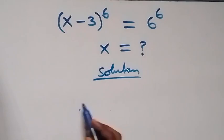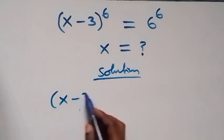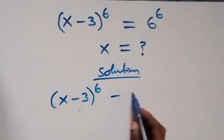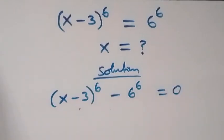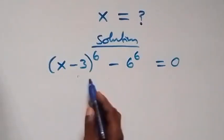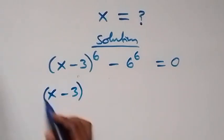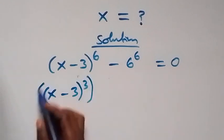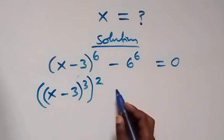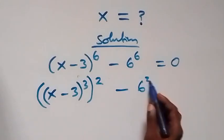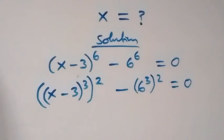Let's take 6 raised to power 6 to the left hand side, and this becomes x minus 3, raised to power 6, minus 6 raised to power 6, equals to 0 from here.